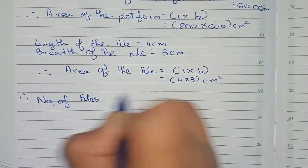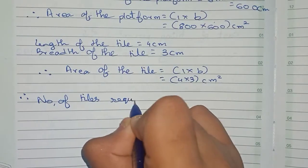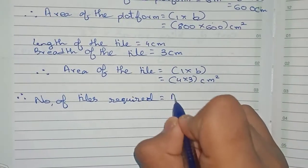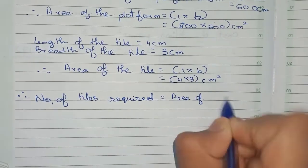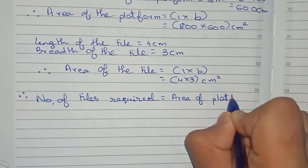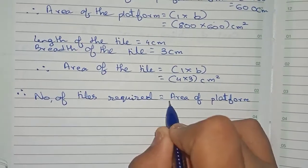number of tiles required equals area of platform divided by area of tile.